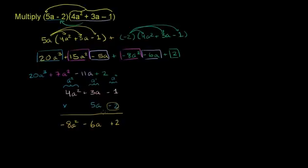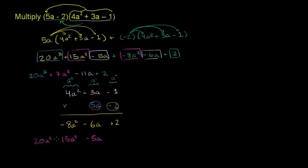Now multiply 5a by the trinomial. 5a times negative 1 is negative 5a, placed under the a column. Then 5a times 3a: 5 times 3 is 15, a times a is a squared — so 15a squared, placed under the other a squared term. Finally, 5a times 4a squared: 5 times 4 is 20, a times a squared is a to the third — giving 20a to the third.